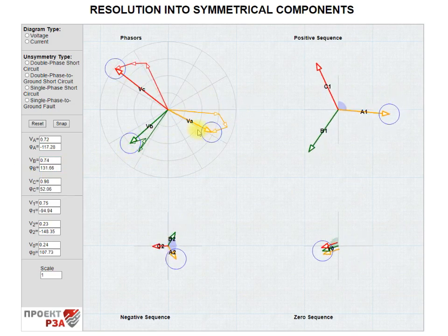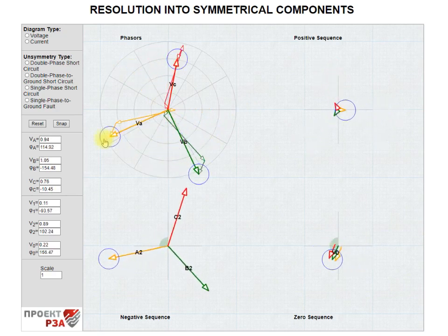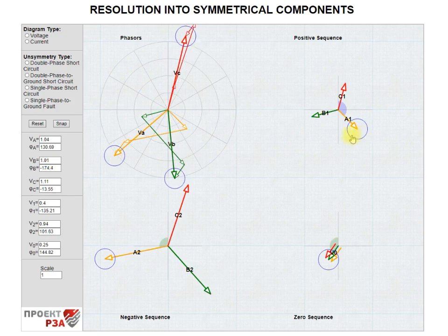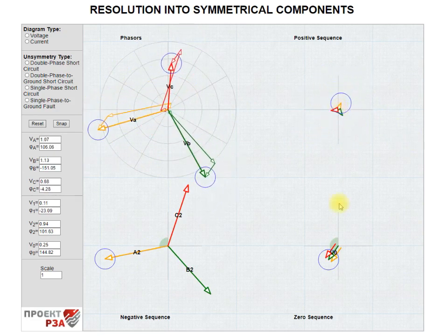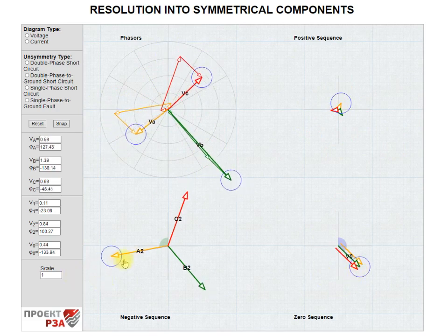The calculation works both ways. You can change the phases and get symmetrical components, and also the other way around. We can alter the symmetrical components and get the phases corresponding to them.